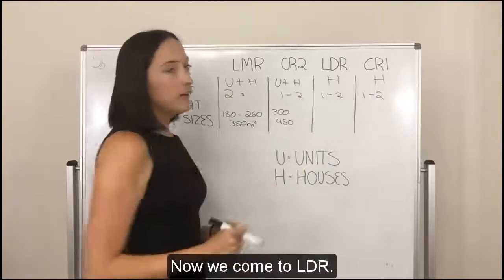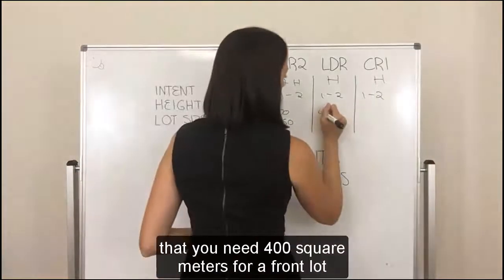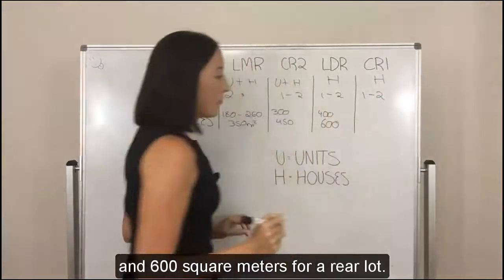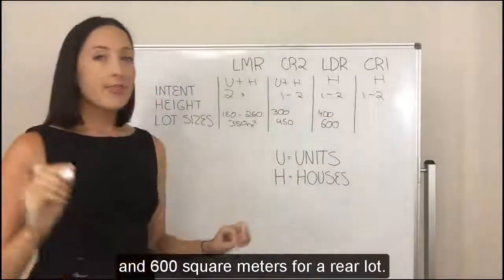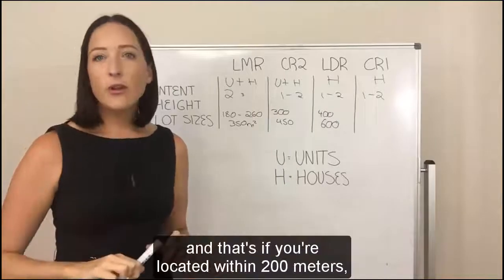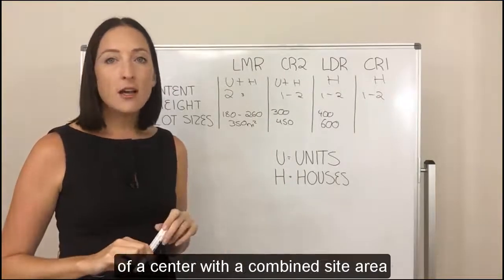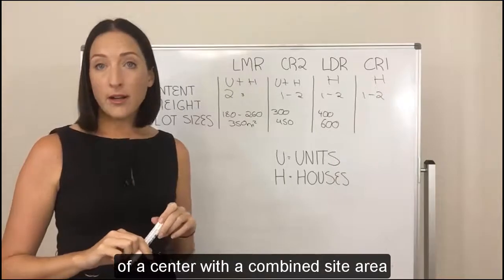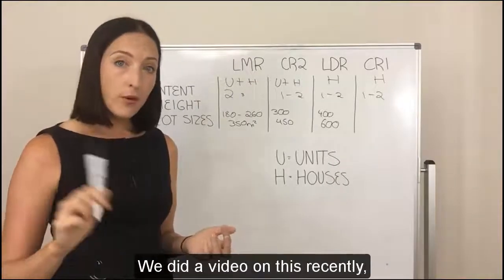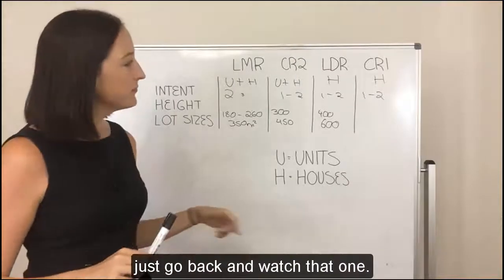Now we come to LDR. The minimum lot size requirements state you need 400 square metres for a front lot and 600 square metres for a rear lot. There is one exception: if you're located within 200 metres safe walking distance of a centre with a combined site area of more than 2000 square metres. We did a video on this recently, so go back and watch that one if you want to know more.